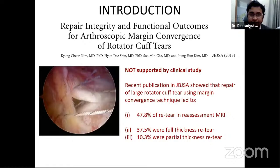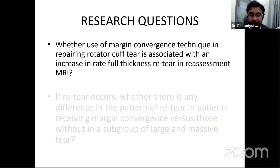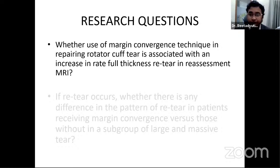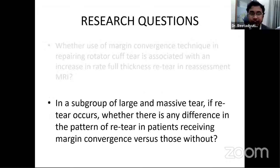In other tear types, margin convergence can actually lead to faster failure than anatomical tendon-to-bone repair. A study on repair integrity and functional outcome after margin convergence showed that almost 48% had a re-tear on reassessment MRI, of which approximately 38% were full thickness re-tears. This raised questions about whether margin convergence is truly a good technique for large tears and how it affects re-tear pattern.